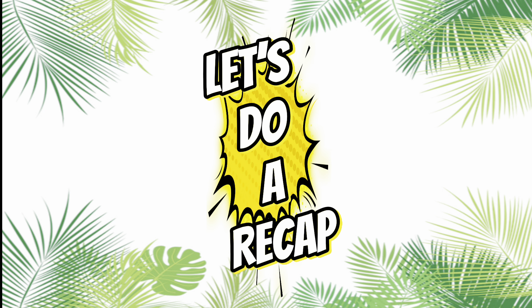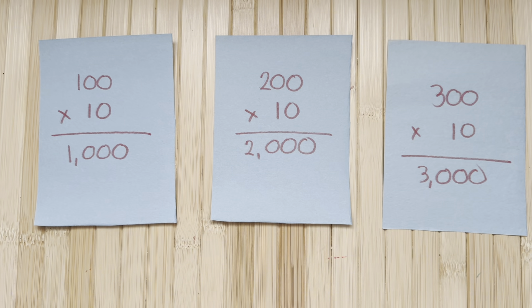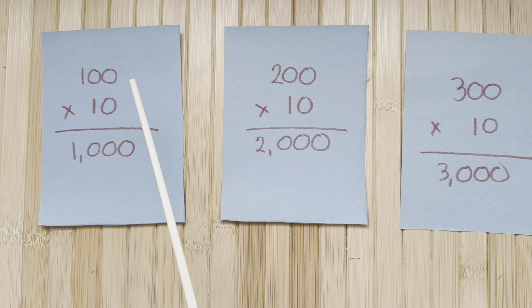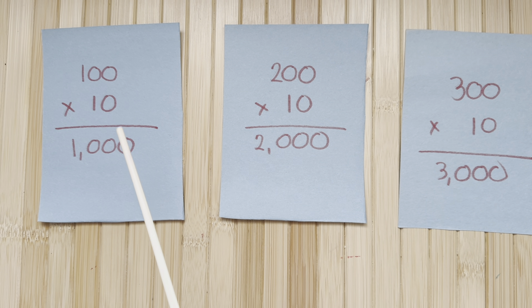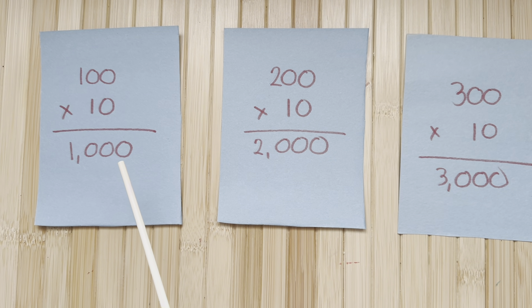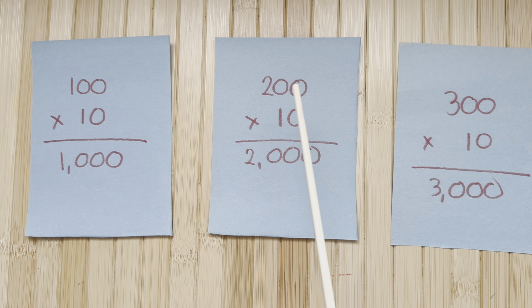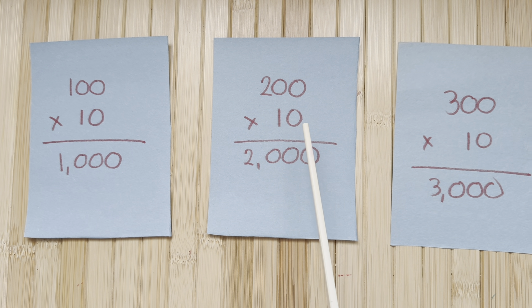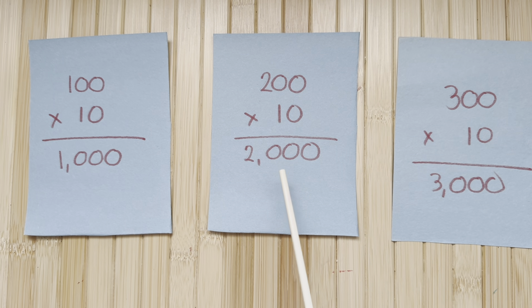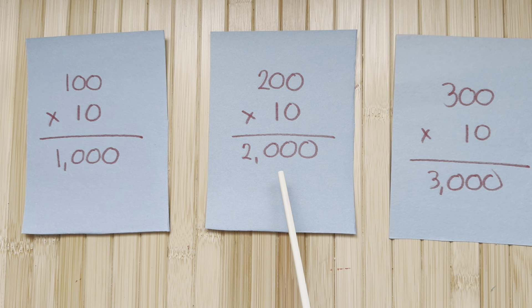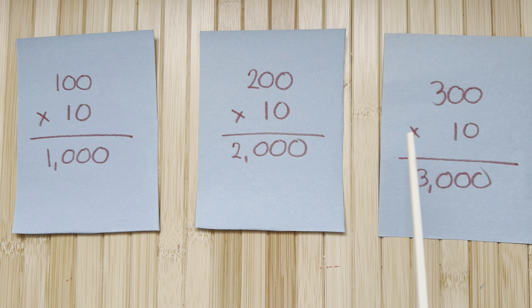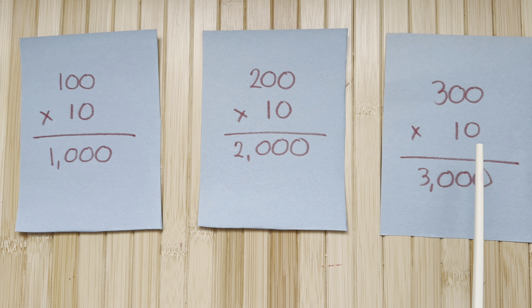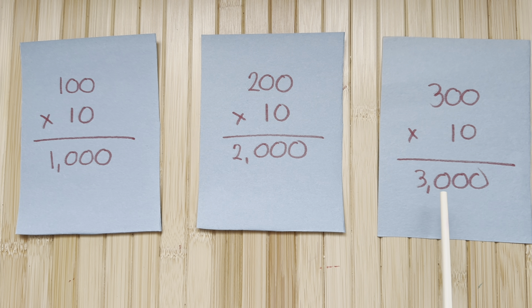Let's do a recap. 100 times 10 is equals to 1,000. 200 times 10 is equals to 2,000. And lastly, 300 times 10 is equals to 3,000.